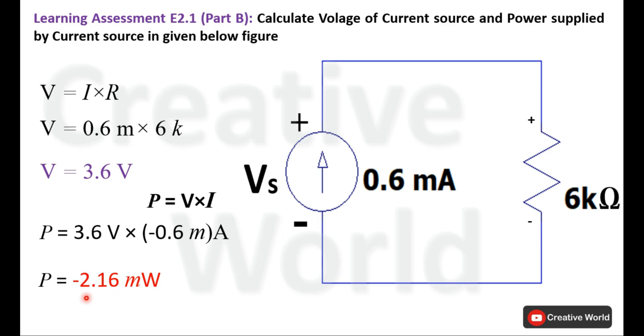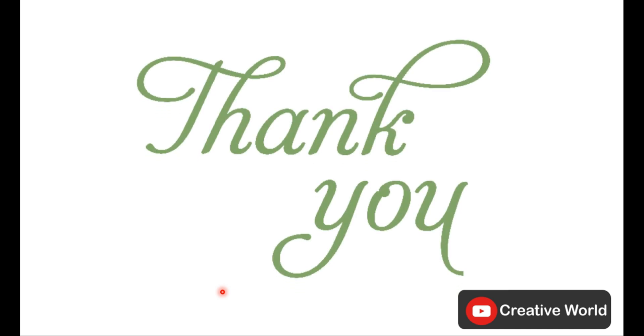This minus sign indicates that power of 2.16 milliwatt is being supplied by this constant current source. So this was Learning Assessment 2.1. Thank you, see you again in the next video.